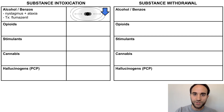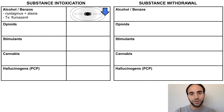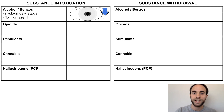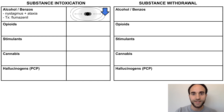For each intoxication syndrome, I'll present a visual that encompasses a characteristic eye feature and behavioral feature of the syndrome to help you anchor your knowledge. For example, for alcohol and benzos, which share a similar intoxication syndrome, the key eye characteristic is nystagmus and the key behavioral characteristic is ataxia. These are represented in the visual to the right, which shows an eye with horizontal nystagmus, and the motion lines around the eye represent unsteadiness or ataxia.